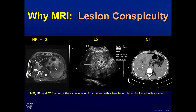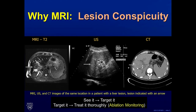This is a good example of why MR is so powerful in seeing the lesion. Here we have a tumor in the liver shown on MRI on the left. And we can see with corresponding images by ultrasound and CT, this tumor is totally invisible. So the MR allows us to see the tumor to target it, and then once we target it, the MR allows us to thoroughly monitor the ablation so that we can treat it effectively.